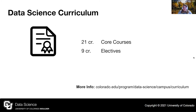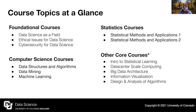In terms of the curriculum, the program features 21 credits of core courses and nine credits of electives. Core classes include foundational classes, statistics courses, and computer science courses. These 21 credit hours feature the breadth and depth of different data science topics. You're learning how to be a data scientist, and all of these classes will have hands-on experience to prepare you to be a data scientist when you graduate.